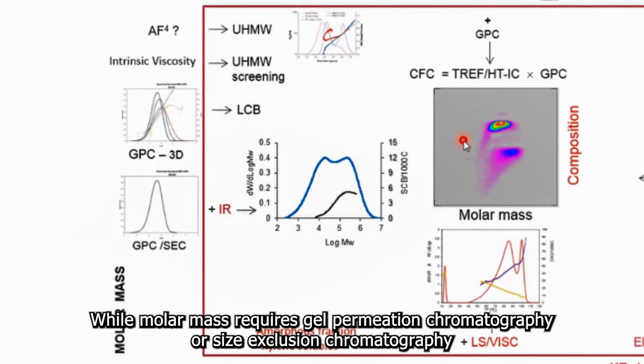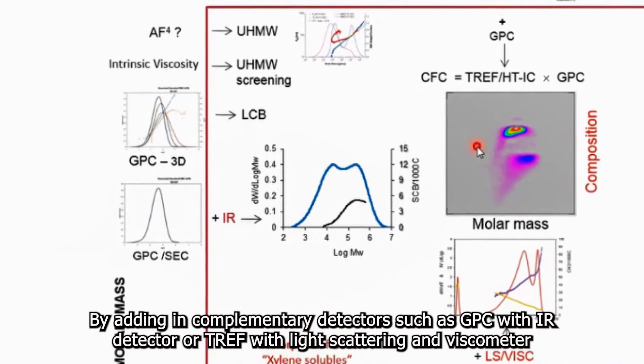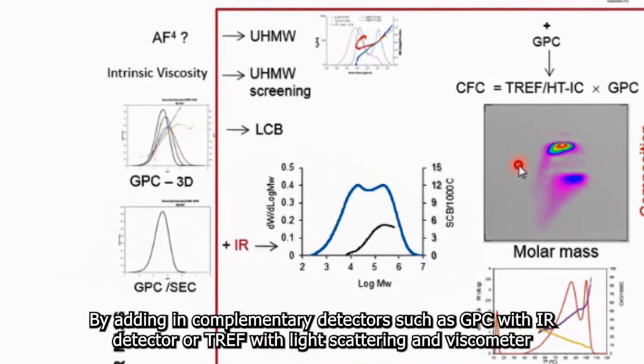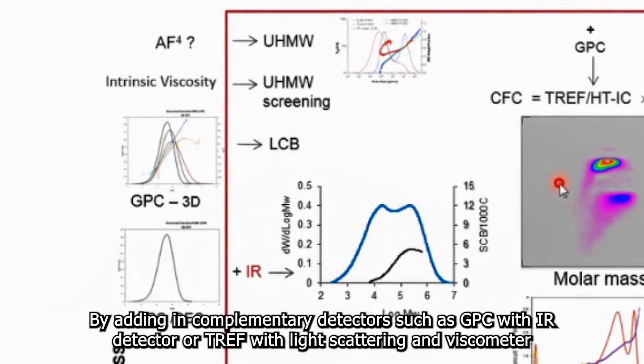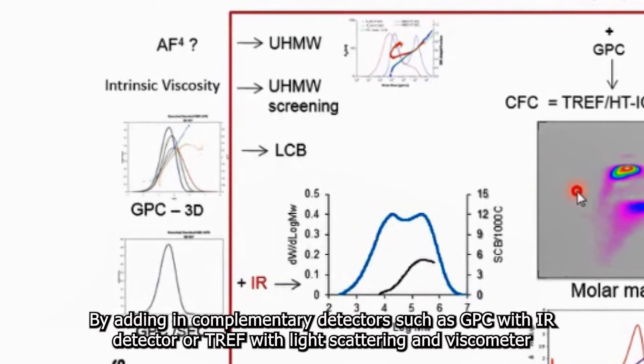For molar mass, we require gel permeation chromatography or size exclusion chromatography by adding in complementary detectors such as GPC with IR detector or TREF with light scattering and viscometer.